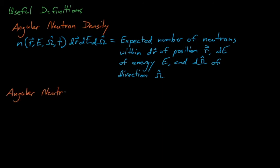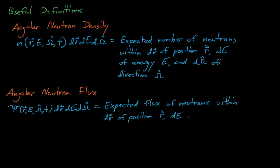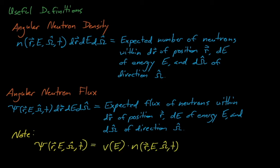The angular neutron flux, ψ, is the expected flux of neutrons within some dr of position r, with some energy dE within E, and some direction dΩ within Ω at time t. Just like the scalar fluxes we've discussed before, we can convert from the neutron density to the neutron flux by multiplying n by the velocity of the neutrons, which is again just some function of energy.